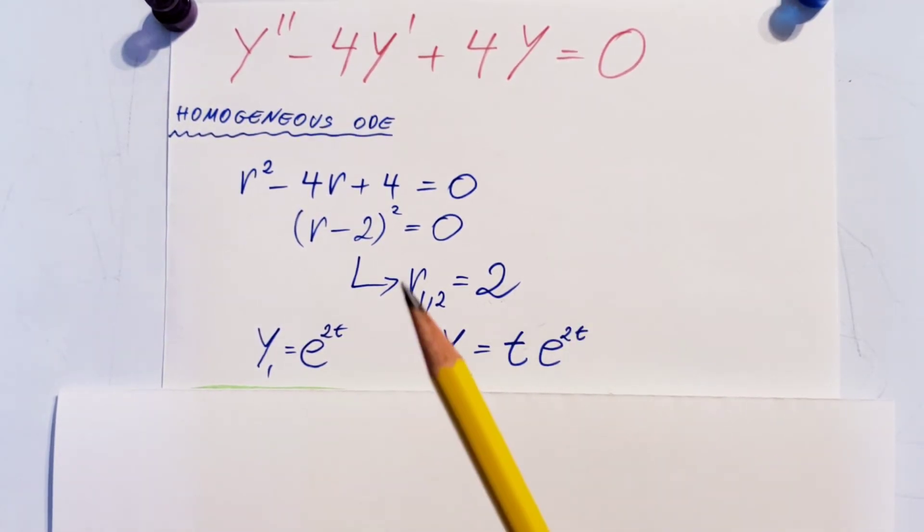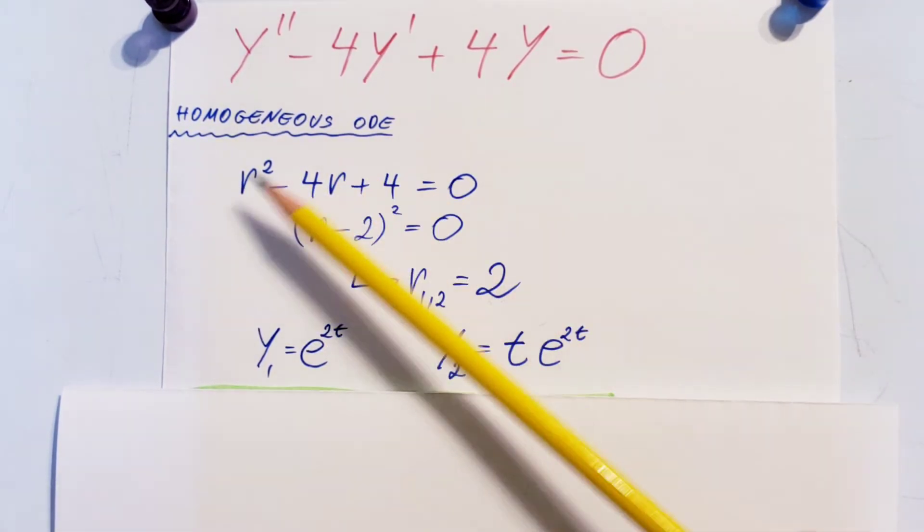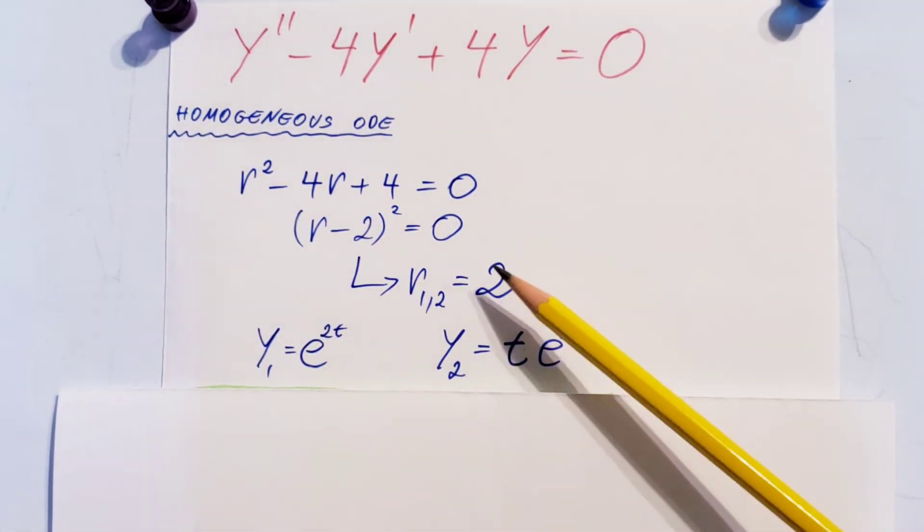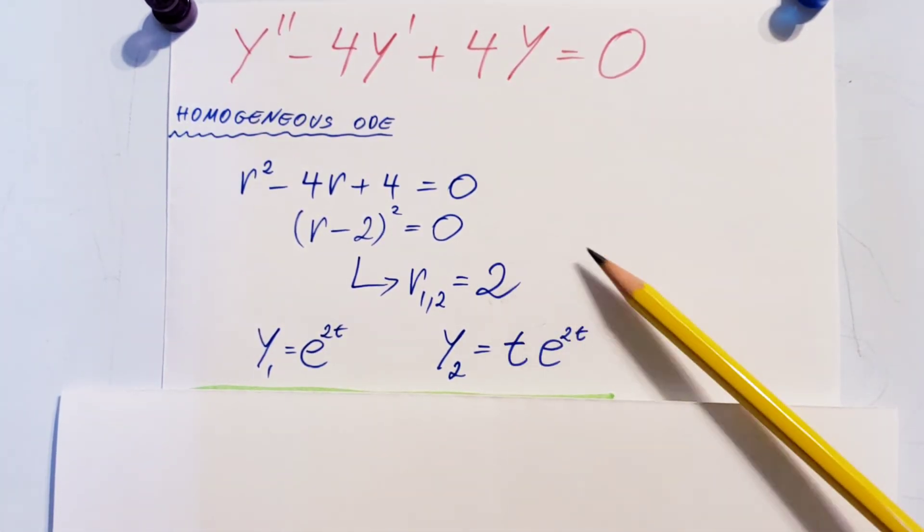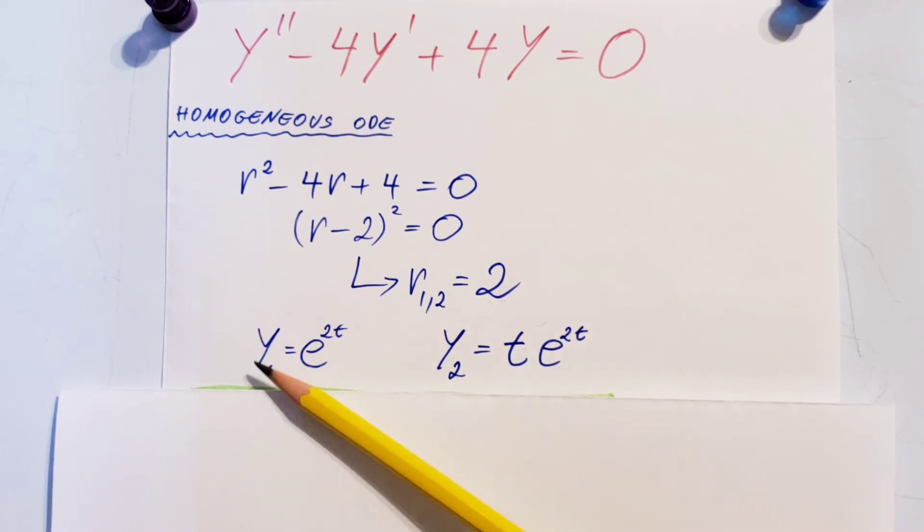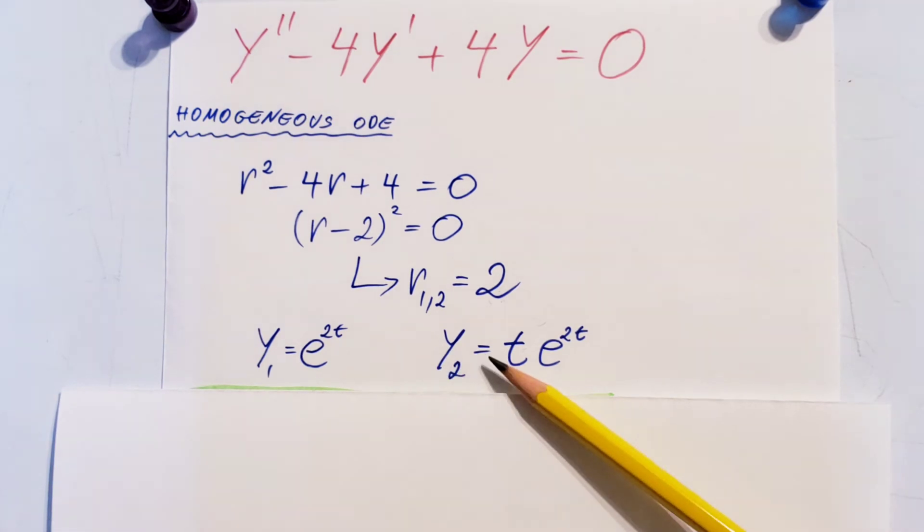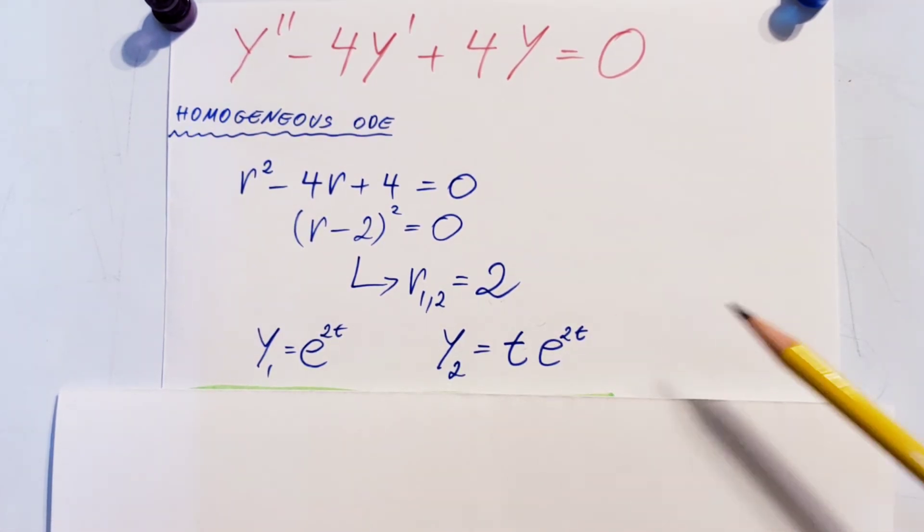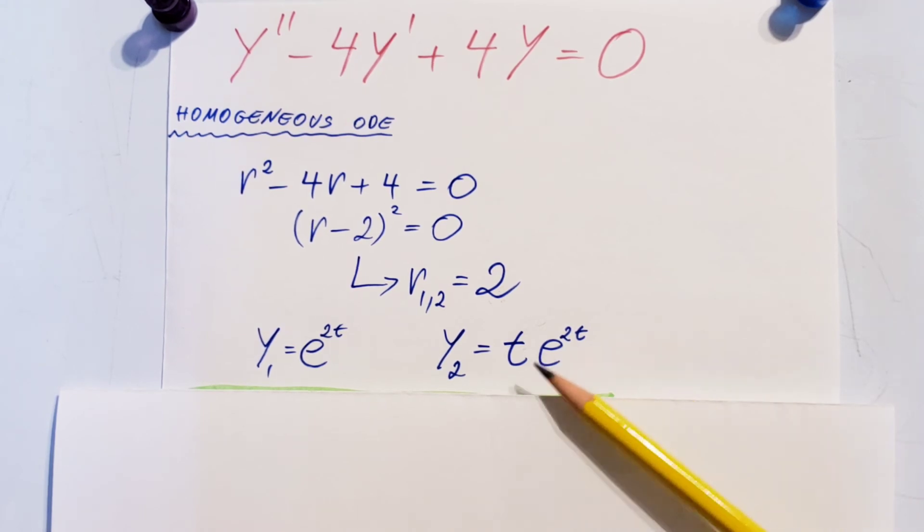If you had three repeating roots, you'd need to ensure y₃ doesn't repeat y₁ and y₂. Simply add another factor of t, so you'd have y₃ = t²·e^(2t).